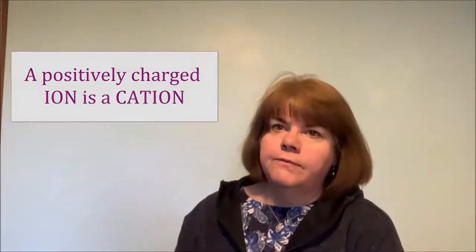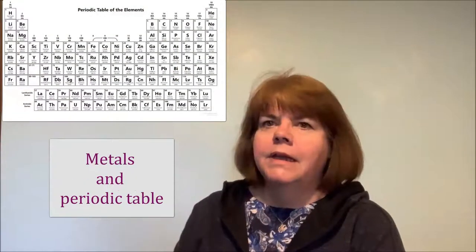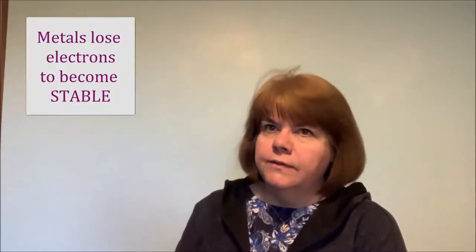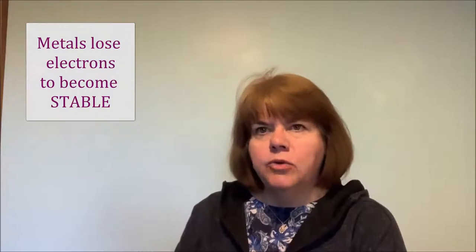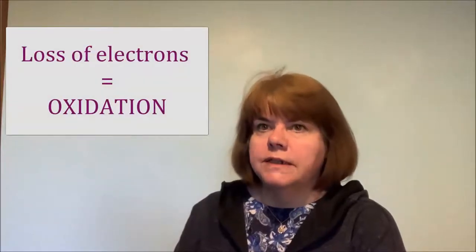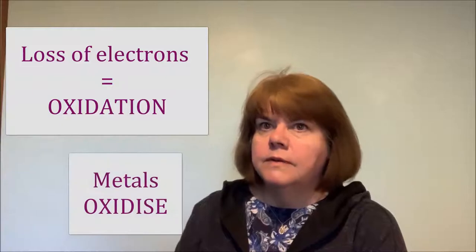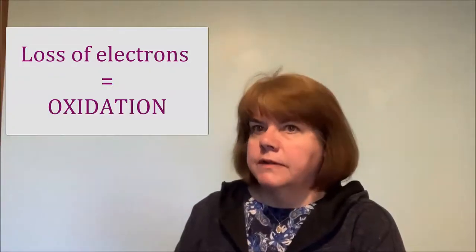The chemical properties of metals vary depending on their position in the periodic table. Typically, because of their low electronegativity, metals react by losing electrons to make them stable. Loss of electrons is also known as oxidation, so we can say typically metals oxidise.